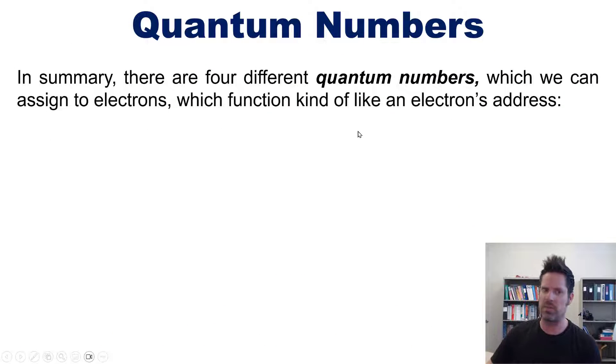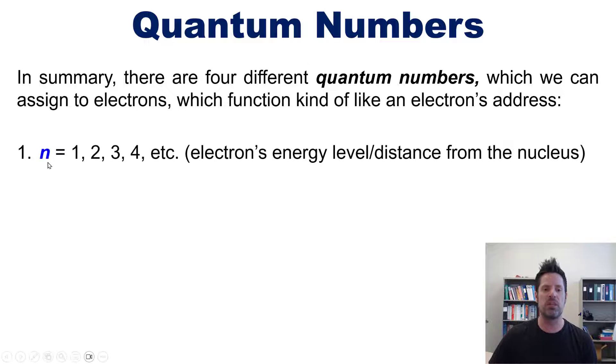In summary, there are four different quantum numbers which we can assign to electrons, which function like the electron's address. The first one is the principal quantum number, which is the electron's energy level or distance from its nucleus, and it can be any integer starting from one. There are some rules tied to that depending on what orbital or element you're talking about.